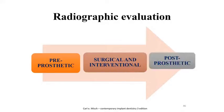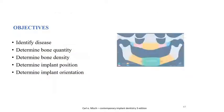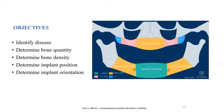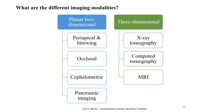Coming to radiographic evaluation: it is performed pre-prosthetically, during surgery, and in the post-prosthetic phase. The objectives are to identify disease, determine bone quantity and density, and determine implant position and orientation. The different image modalities include two-dimensional and three-dimensional imaging; the most commonly used for implant dentistry are OPG or CBCT.